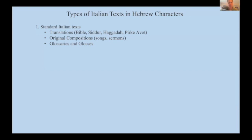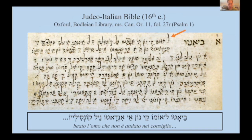The first category of texts in Hebrew characters is in a language I would call standard Italian, or at least nearly standard Italian. A number of texts in Judeo-Italian are Jewish only in the use of the Hebrew alphabet. For example, there was a complete Bible translation written in the 16th century, and the language of this translation is essentially just Italian — the same Italian that non-Jews were using in the 16th century. This manuscript is in three parts: two of the three parts are in Oxford, one is in JTS in New York. If I read this aloud, it would just sound like normal Italian.